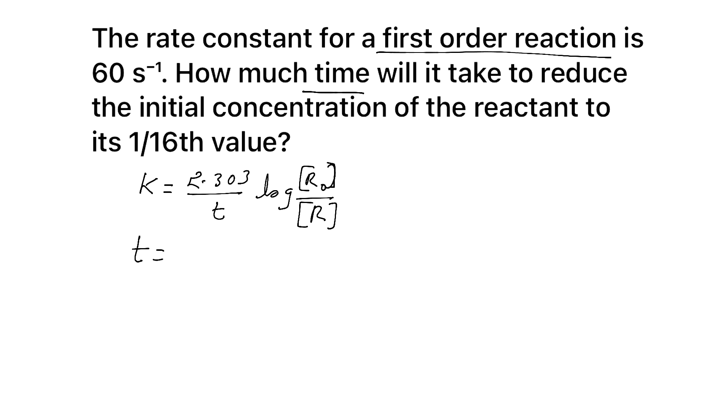Now we need t, right? So t equals 2.303 by K log R₀ by R. Correct? Now, initial concentration you can take as R₀ and present concentration is 1/16th of initial concentration. Correct. Substitute and find the answer, direct.